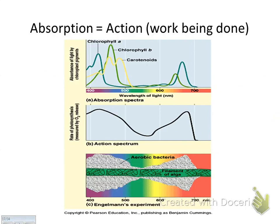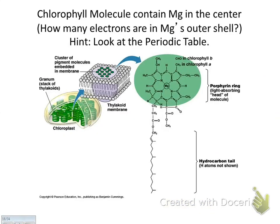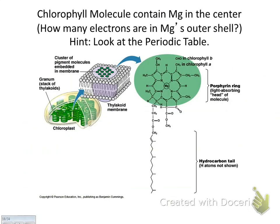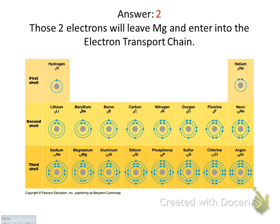Photosystems are groups of proteins that absorb sunlight. Here's what chlorophyll looks like — do you see how it has Mg in the center? That's magnesium, which has two electrons in its outer shell. When it absorbs sunlight, it releases those electrons.